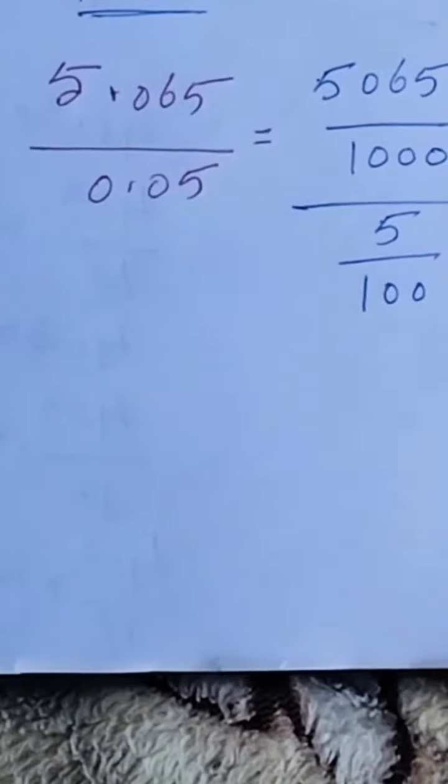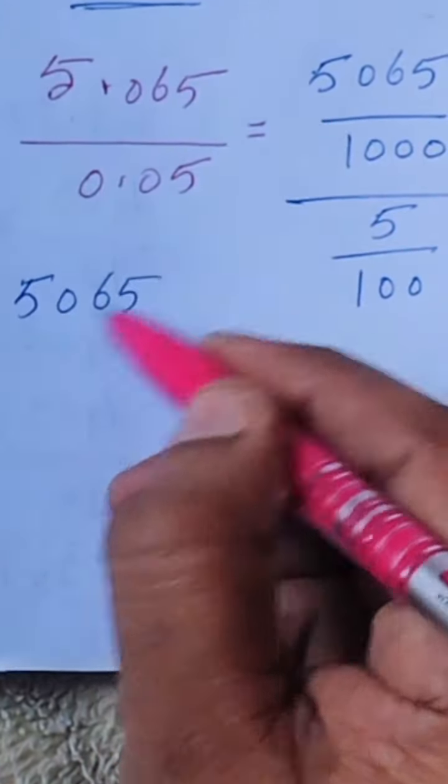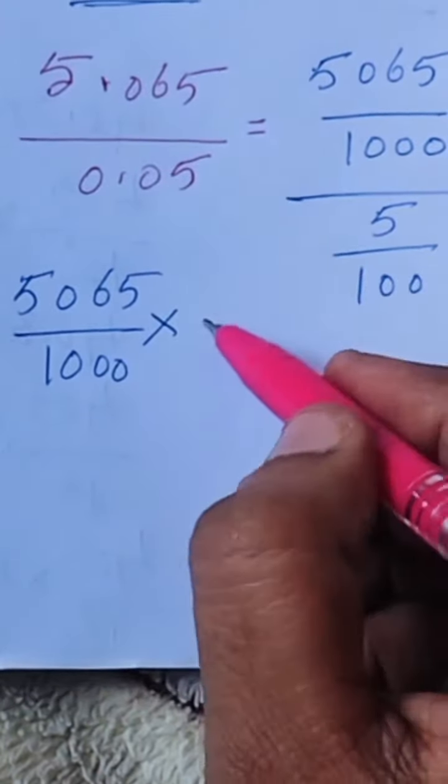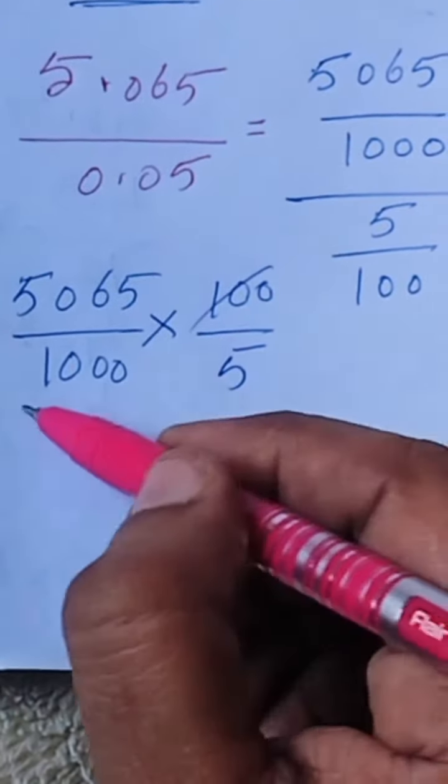So simply we write 5,065 by 1,000 into 100 by 5. So 100 by 5, so ones...